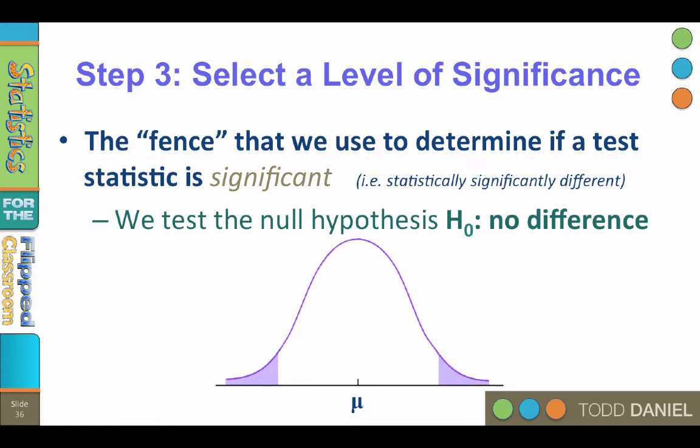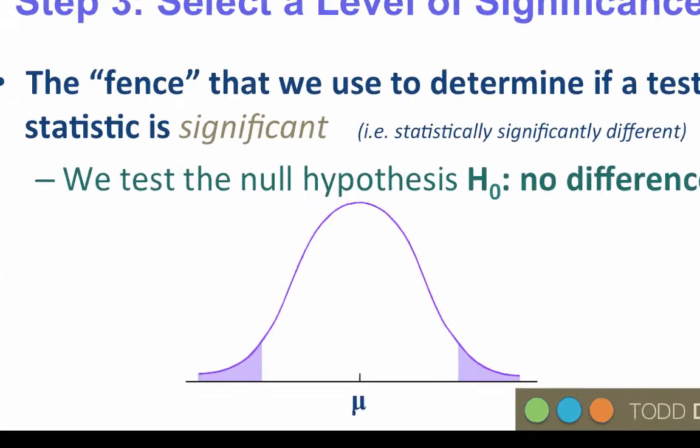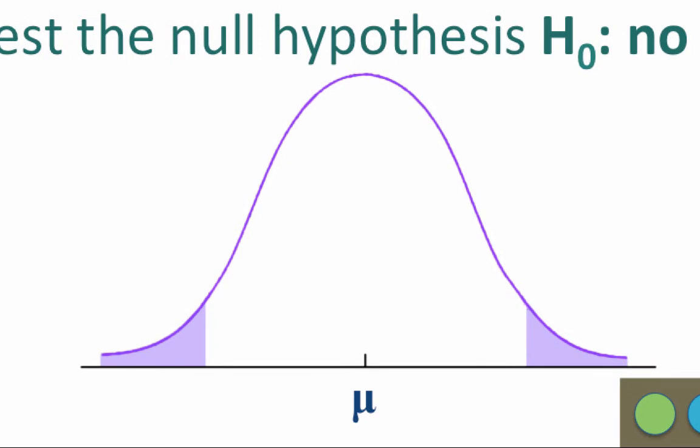We are doing hypothesis testing. The hypothesis that we test is the null hypothesis, and the null hypothesis states that there is no difference between the sample mean and the population mean. So we are going to establish two fences, one on the right and the other on the left. Values over the fence in the purple shaded area, which is called the critical region, are so extreme that it is unlikely we would randomly select a sample with this mean if the null hypothesis is true.